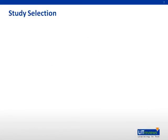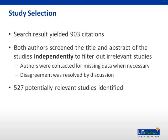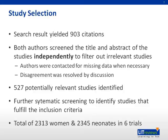A search was conducted through the various databases and the search result yielded 903 citations. Both authors screened these citations independently by screening the title and abstract to filter out irrelevant studies such as duplicates, review articles, and editorial letters. The authors were contacted for any missing data, and disagreements between the authors were resolved by discussion. In the end, 527 potentially relevant studies were identified.